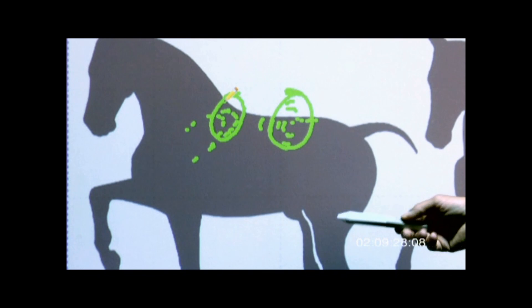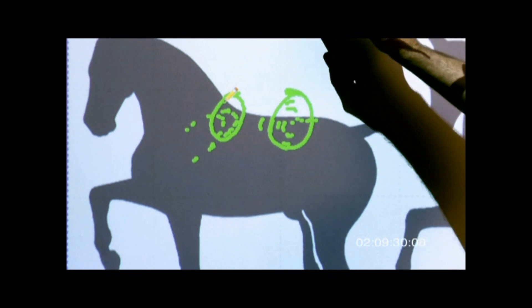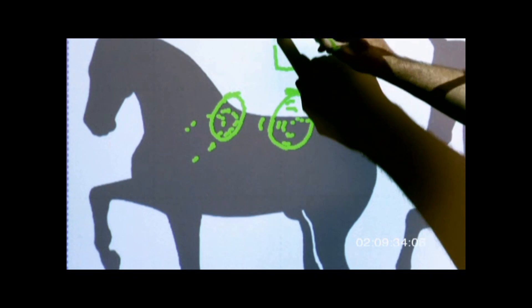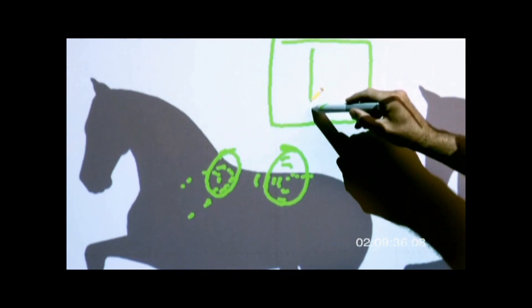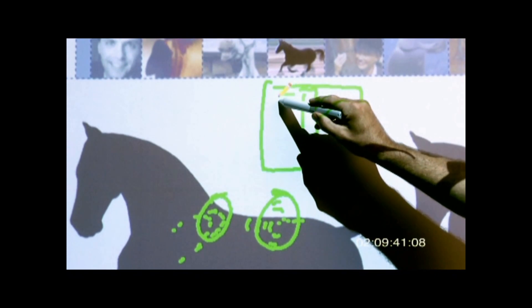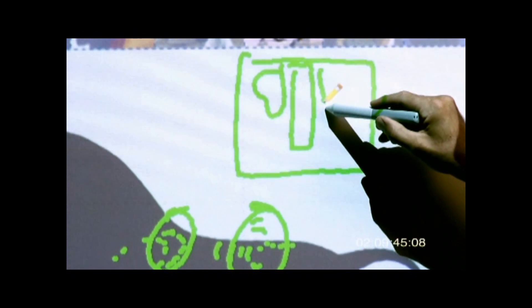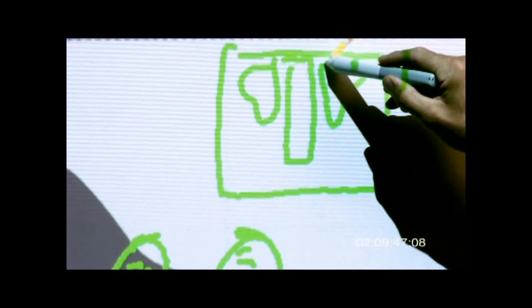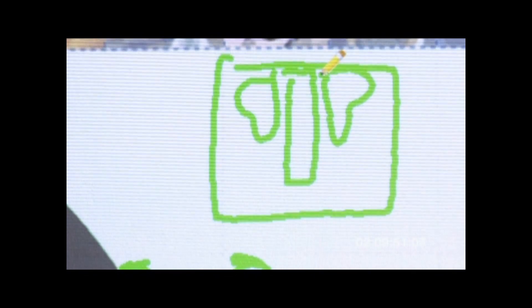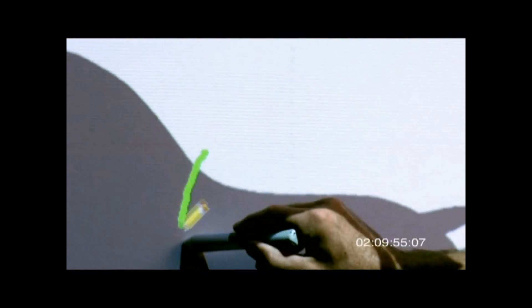So when you look at the saddle pad from the top down, sometimes if this is a big square pad, you see an area right here where the channel is clear. And you see like a kidney shape almost, a dry spot on your saddle pad.